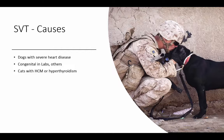The causes include dogs with severe heart disease, and SVT can be congenital in Labrador Retrievers — so we'll see it in young labs. We can also see it in cats with hypertrophic cardiomyopathy or hyperthyroidism.